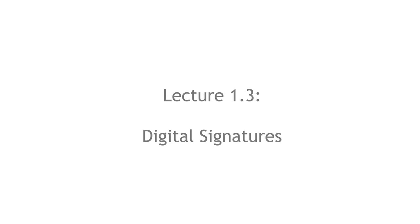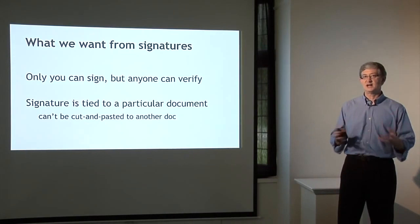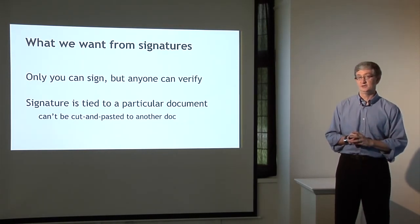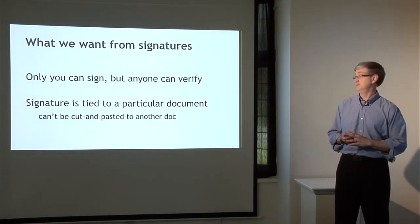In segment 1.3, we're going to talk about digital signatures — the second cryptographic primitive we need as a building block for the cryptocurrency discussion. A digital signature is supposed to be just like a signature on paper, only in digital form. What we want from signatures is two things: first, only you can make your signature, but anyone who sees it can verify that it's valid. Second, the signature is tied to a particular document, so somebody can't snip your signature off one document and glue it onto another.